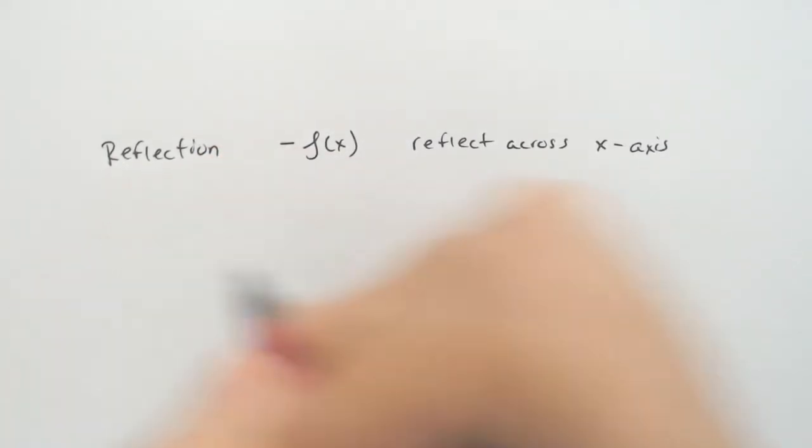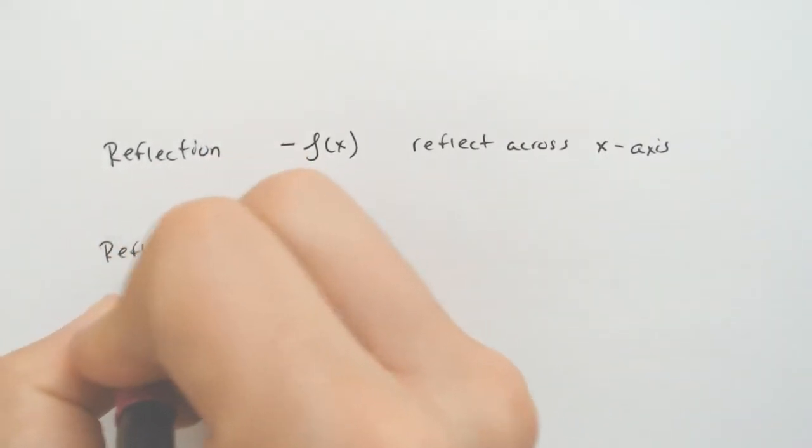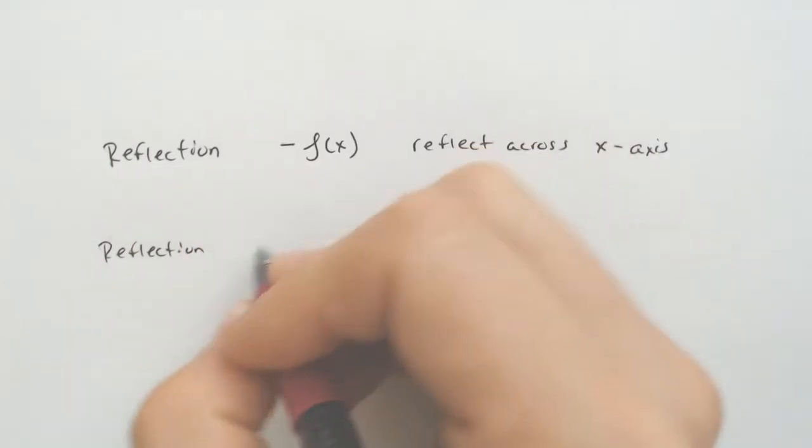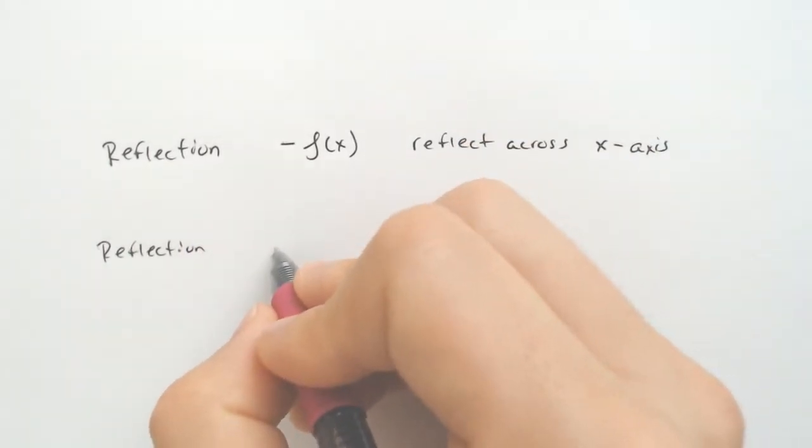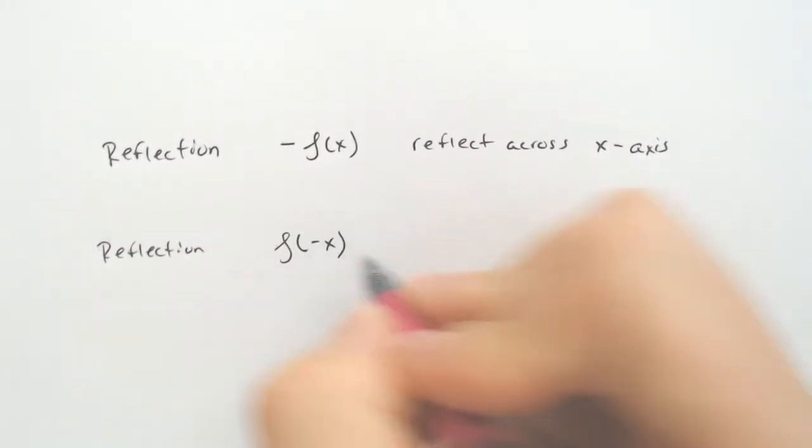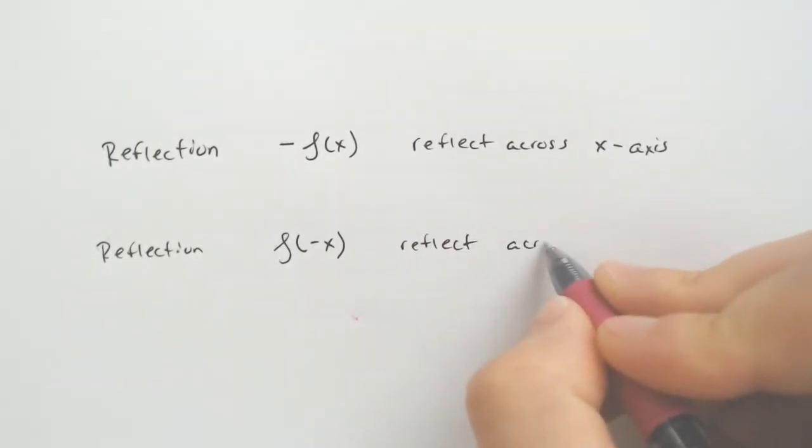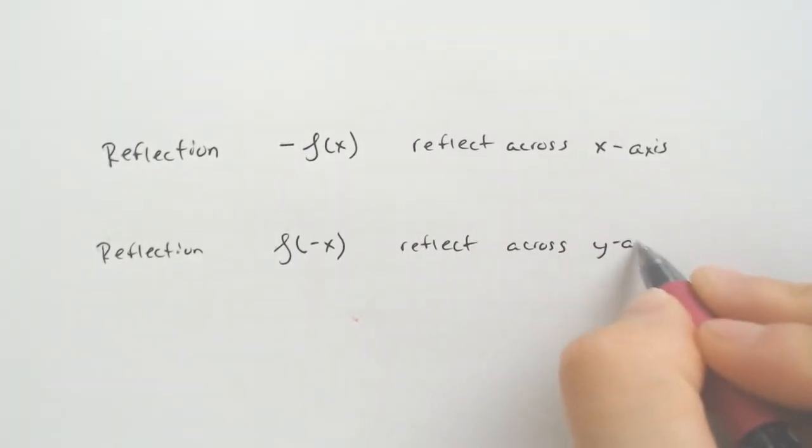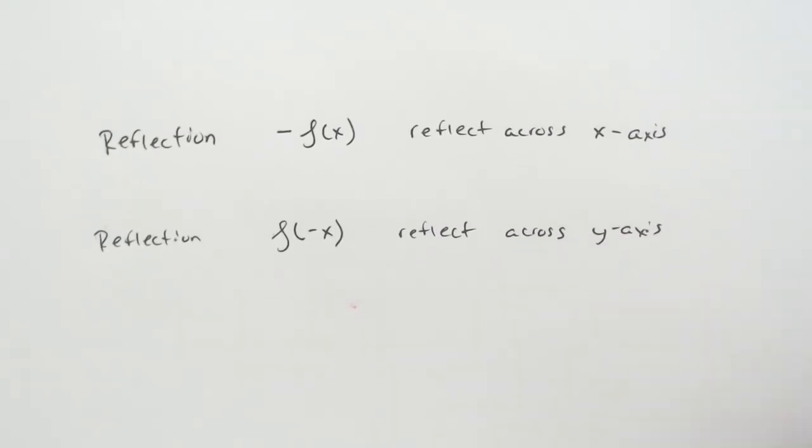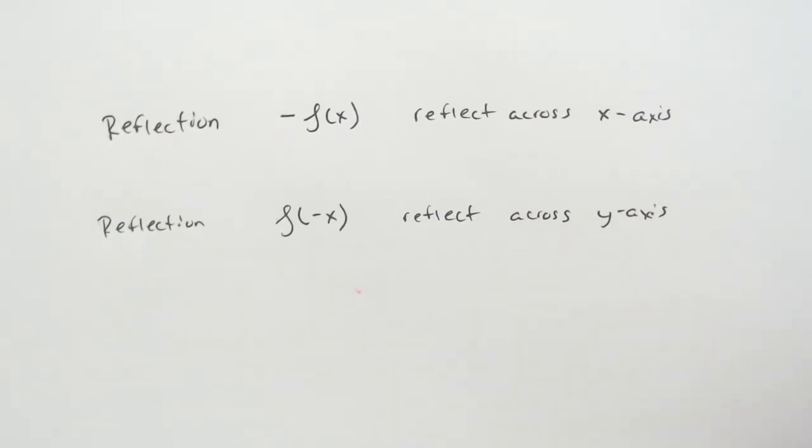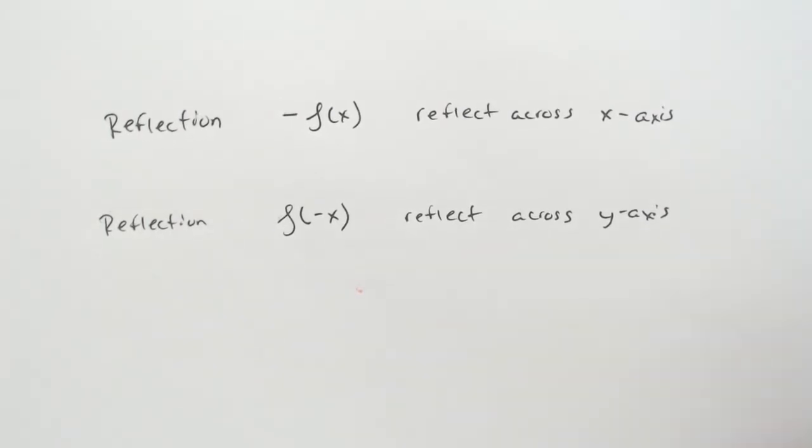And then if you had a reflection of f of negative x, that would reflect across the y-axis. And then there's some other things that just kind of deal with it, but are very different.